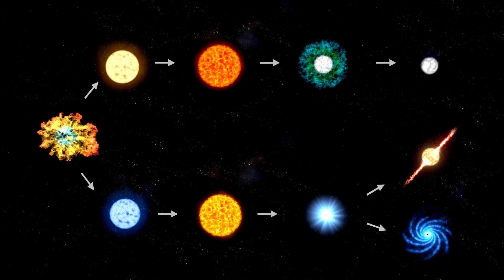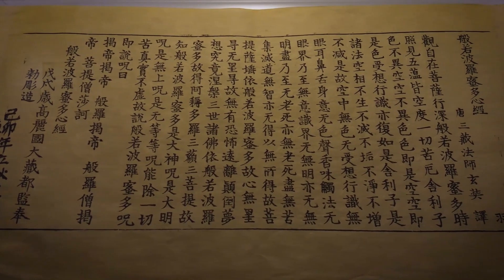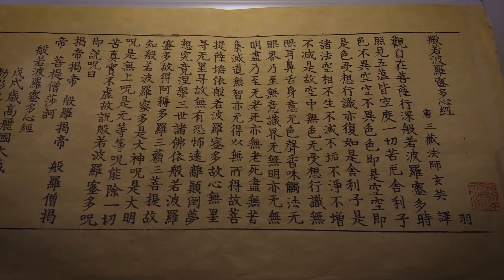Betelgeuse began its life as a hot blue star, shining with incredible intensity. Over time, it cooled and expanded into the red supergiant we see today.